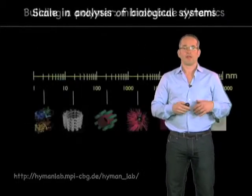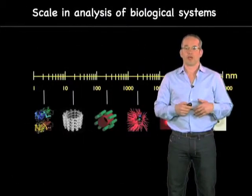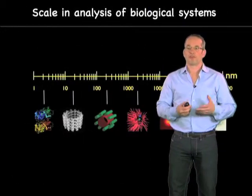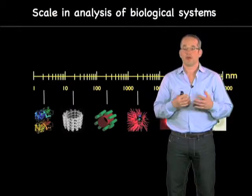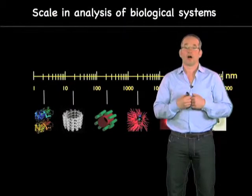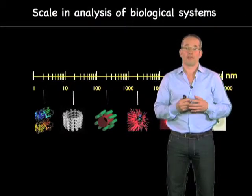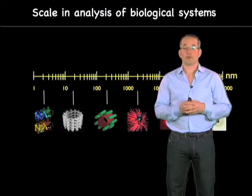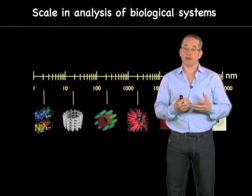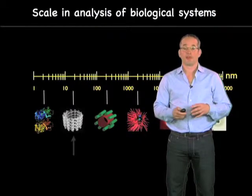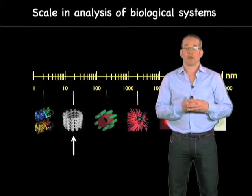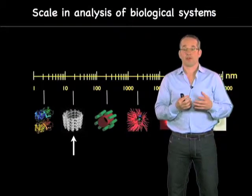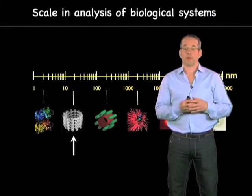If you remember, in the last talk, when we were discussing about scale in biological analysis, microtubules are organizations of protein molecules called tubulin, shown here. And tubulin molecules come together to organize these microtubule polymers.